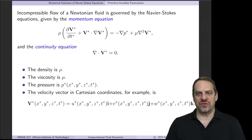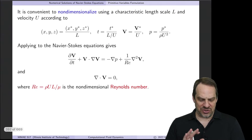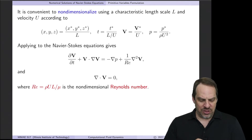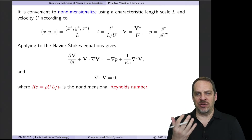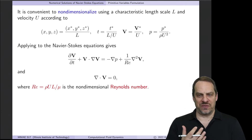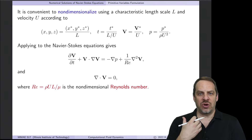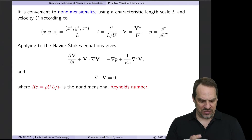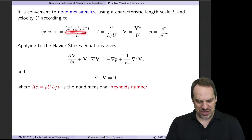It's common in fluid mechanics and heat transfer to non-dimensionalize. I'll show you in one slide how and why we do that — we want to get the dimensionality out of the problem. All the independent variables, all the dependent variables, and all of the physical parameters within the Navier-Stokes equations have dimensions. So to non-dimensionalize, we take our spatial dimensions x, y, and z.